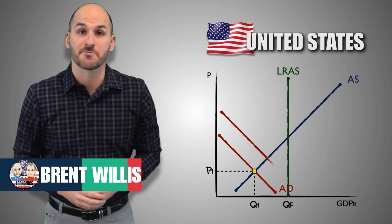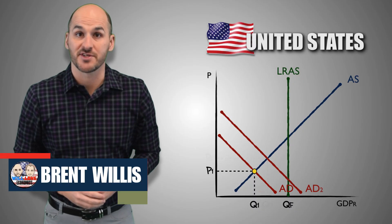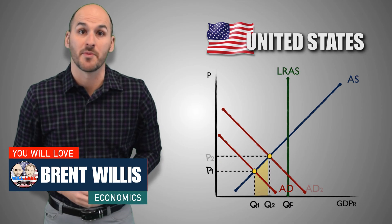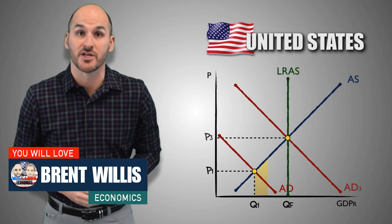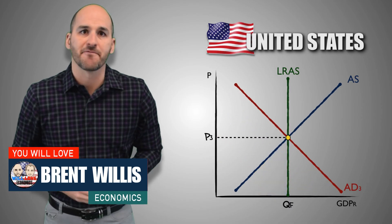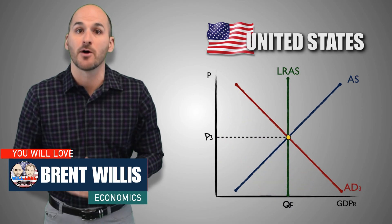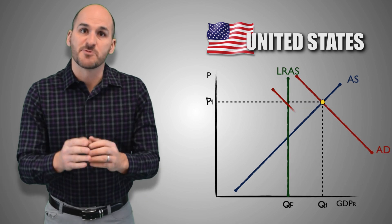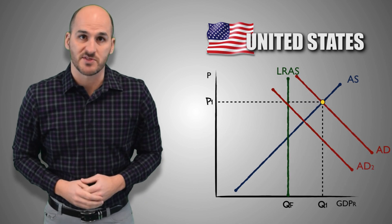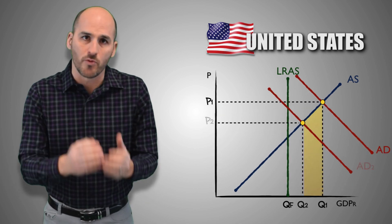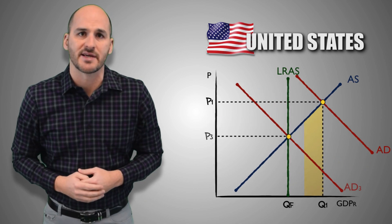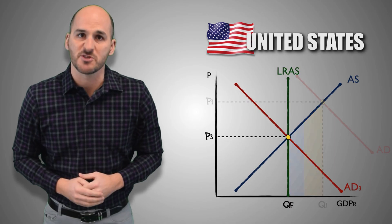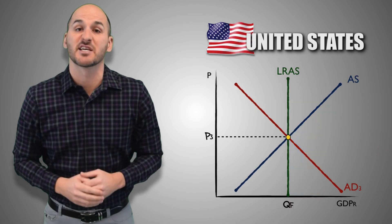When the aggregate economy experiences fluctuations but fails to return to full employment through natural market adjustments, government can implement fiscal policy to help stabilize the economy. Through spending and tax policy, government's goal is to either stimulate or reduce aggregate demand by changing consumer spending and government expenditures.